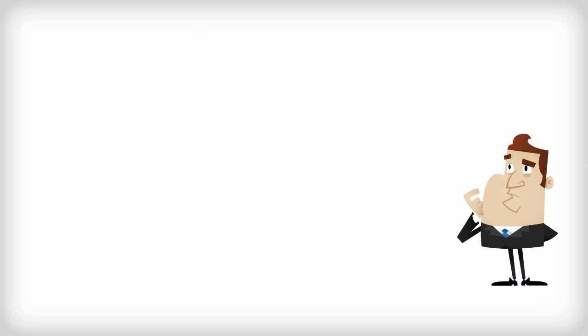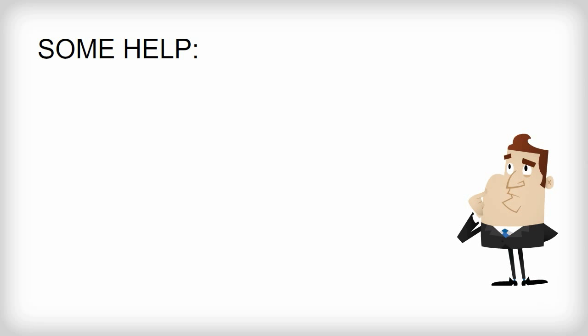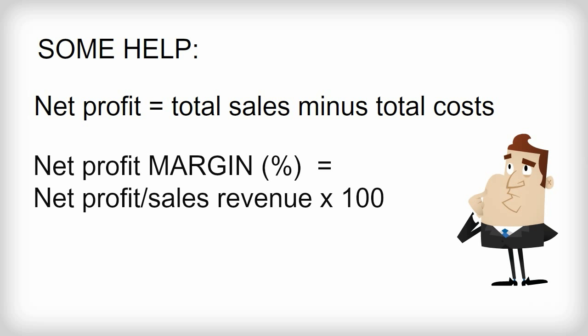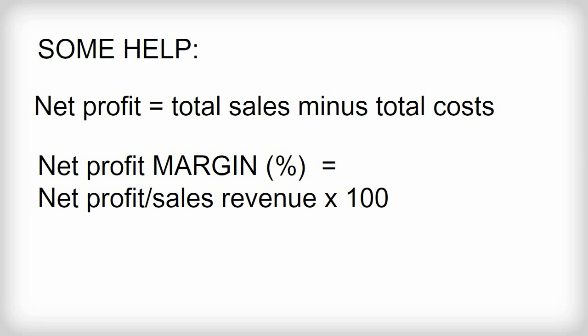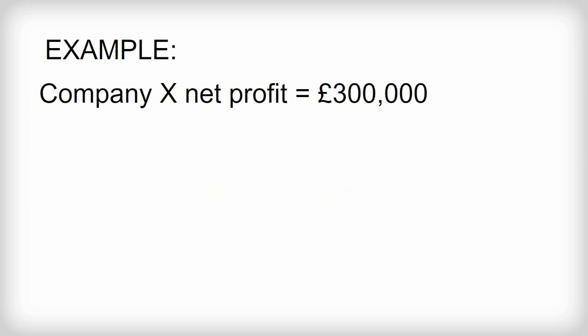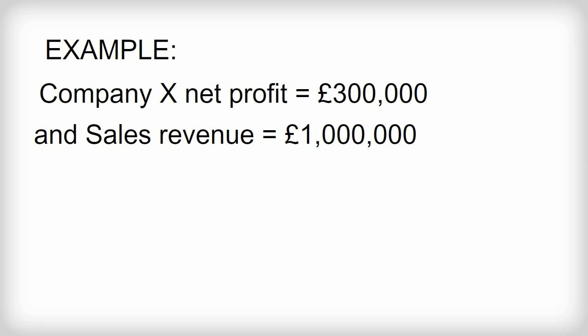Here are some pointers to think about. Net profit is sales revenue minus all costs, fixed and variable. Net profit margin is net profit expressed as a percentage of sales revenue. The formula for net profit margin is net profit divided by sales revenue times 100. So if in company X net profit is £300,000 and sales revenue is £1 million, net profit margin would be £300,000 divided by £1 million times 100, which equals 30%.